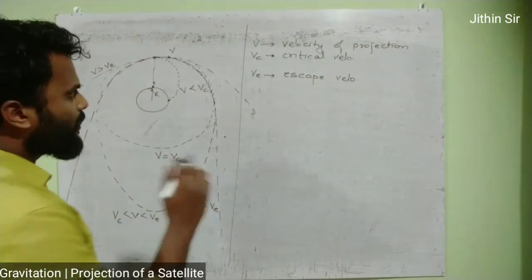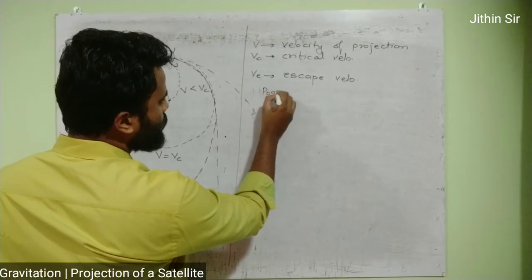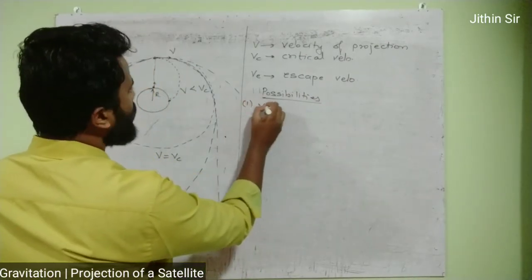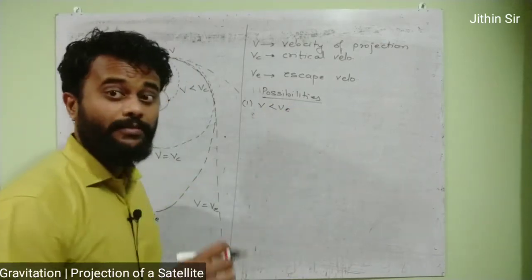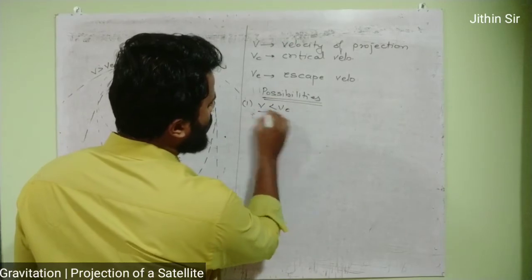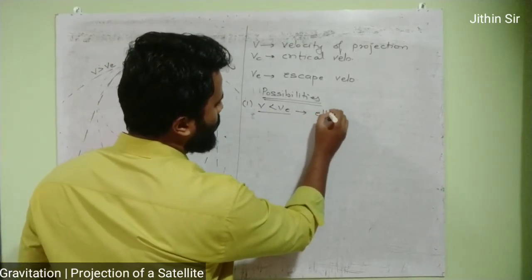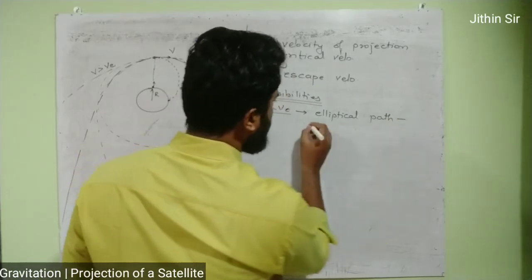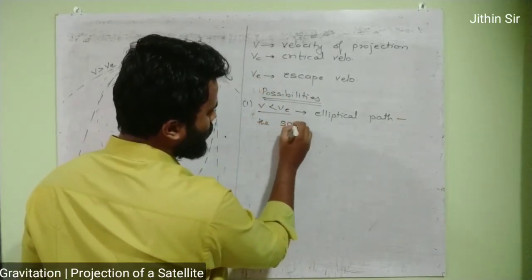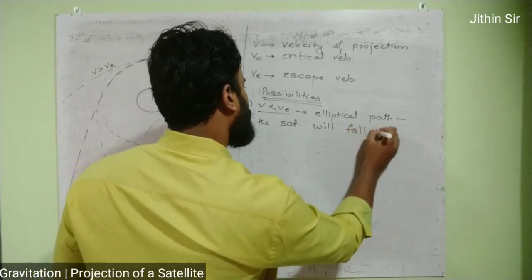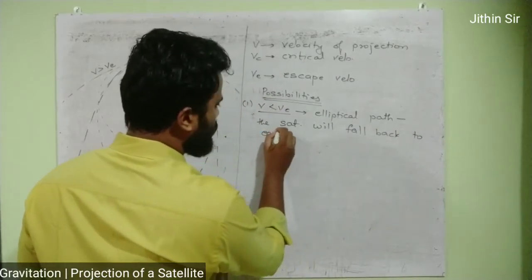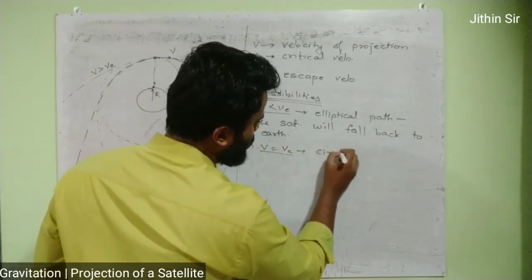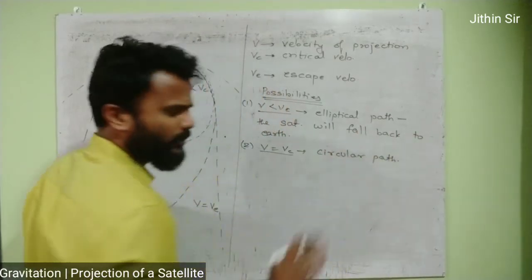So there are five possibilities. First possibility: if velocity of projection is less than critical velocity, the satellite takes an elliptical path back to earth. Second possibility: if velocity of projection equals critical velocity, the satellite takes a circular path and will not fall back.